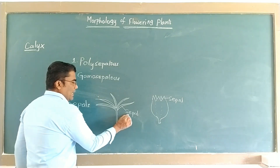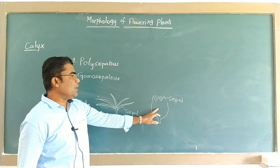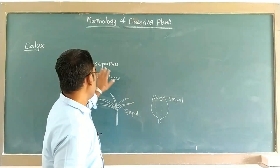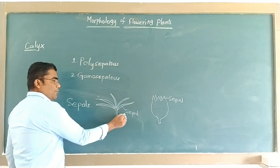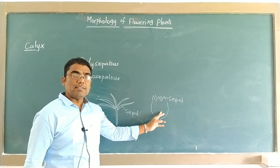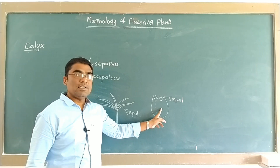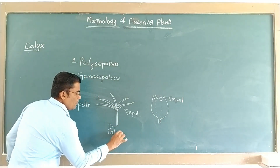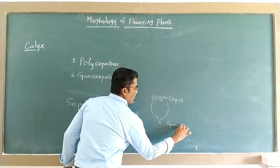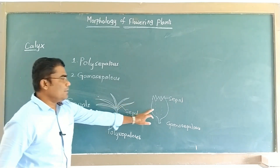In the first category, the sepals are free — they are not in a fused condition. Whereas in the second diagram, all the sepals are fused to form a cup-like structure. Polysepalous is the calyx where all the sepals present are free. Gamosepalous is the calyx where the sepals are fused with each other to form a cup-like structure. So polysepalous has free sepals and gamosepalous has fused sepals.